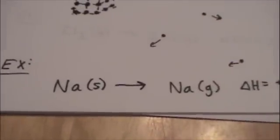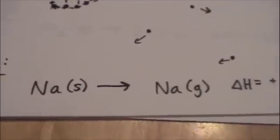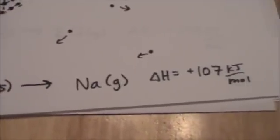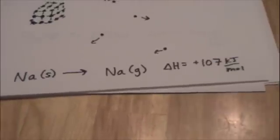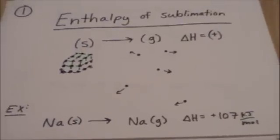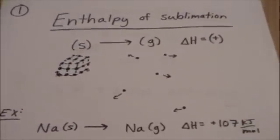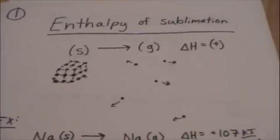So sodium metal, sodium solid, going to sodium gas, has a delta H of 107 kilojoules per mole. These can be found in tables. Physical chemists love this. They do this all day. They figure out the enthalpies of sublimation.